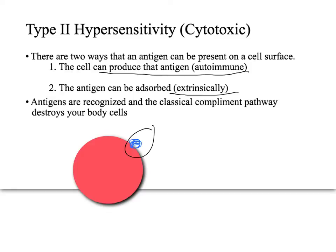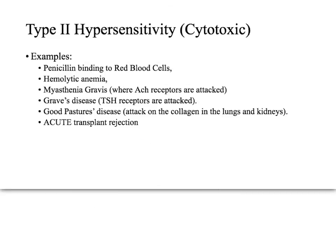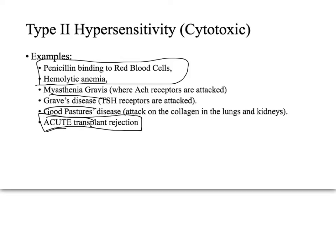In type 2 hypersensitivity, the regular antibodies IgM and IgG are used, mediating attack against the cell, and the classic complement pathway is utilized to opsonize the cell. This is different from type 1, which uses IgE. Common examples include hemolytic anemia, penicillin binding to red blood cells, myasthenia gravis, Graves disease, Goodpasture's, and acute organ transplant rejection. Chronic organ transplant rejection is a type 4.